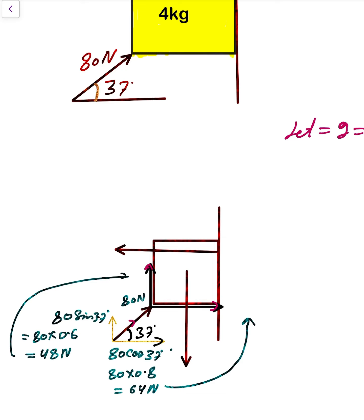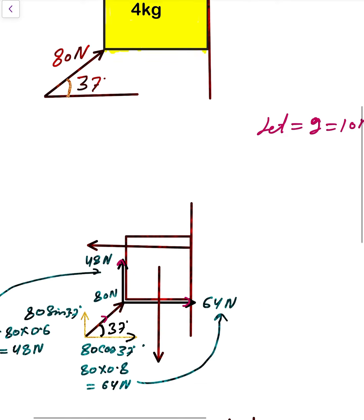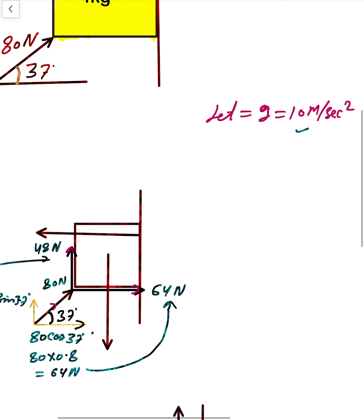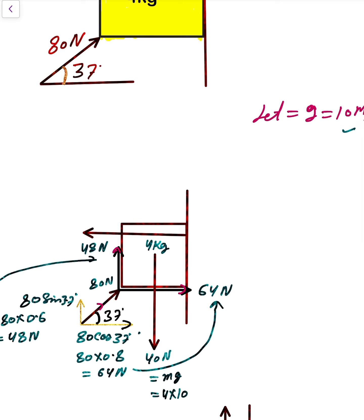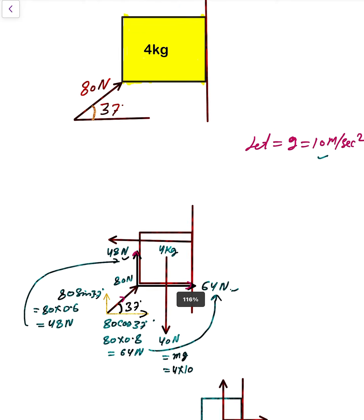So we have 64 Newton in the horizontal direction and 48 Newton in the upward vertical direction. The weight of the block is mg = 4 × 10 = 40 Newton acting downward.